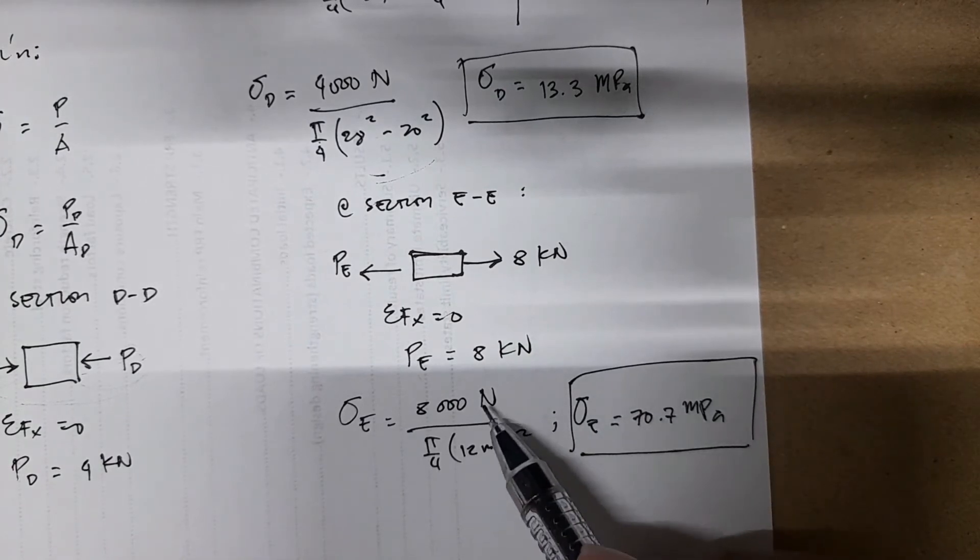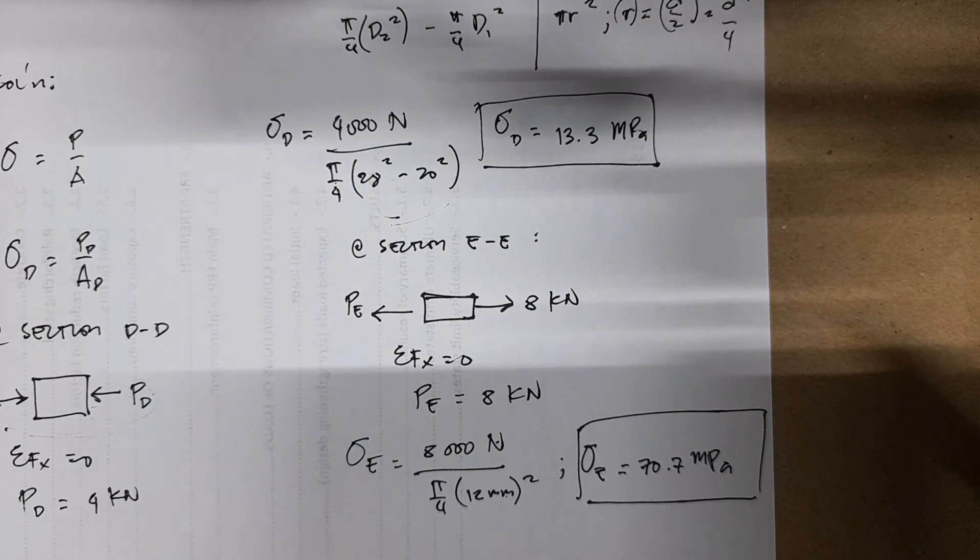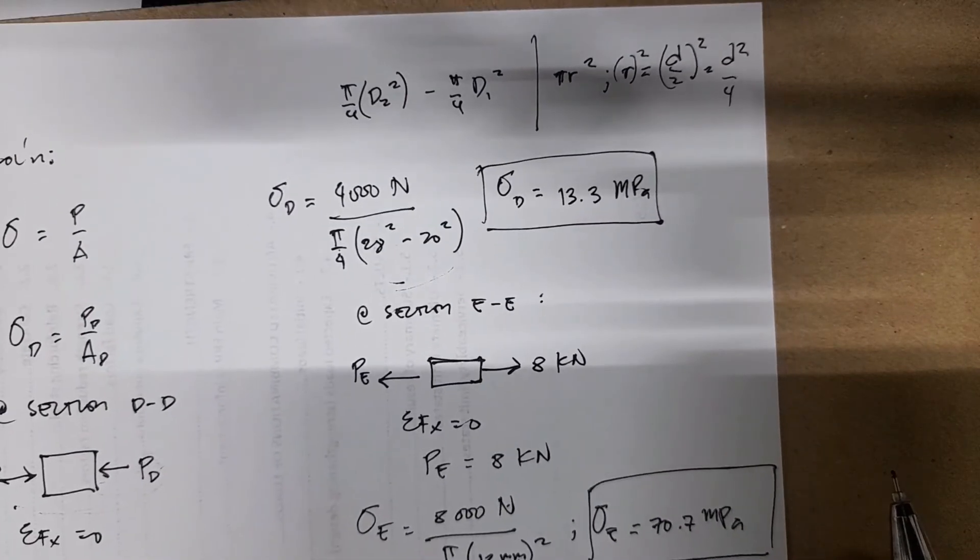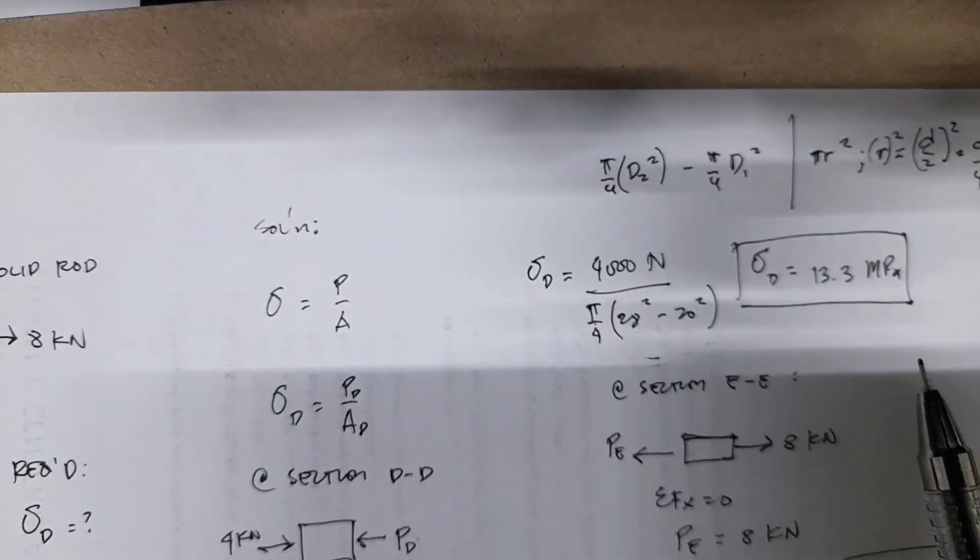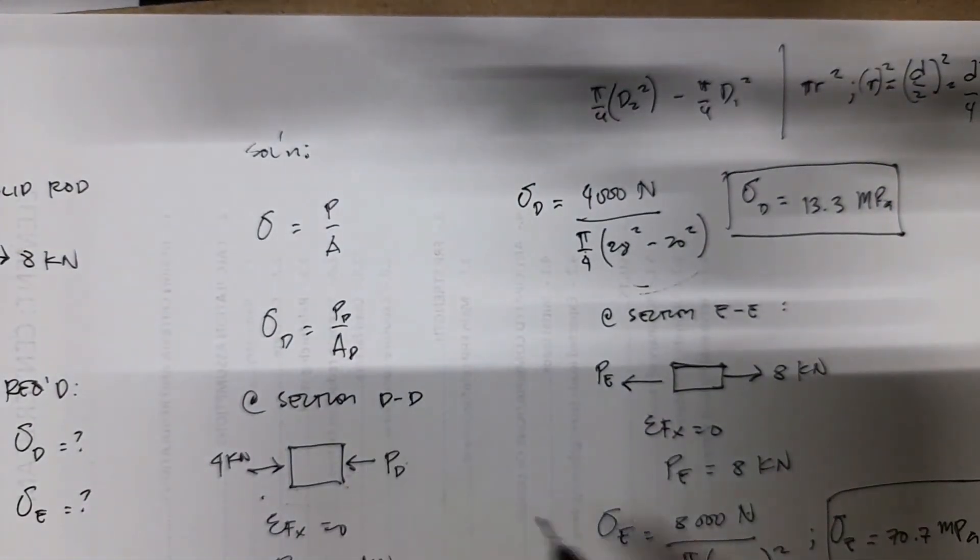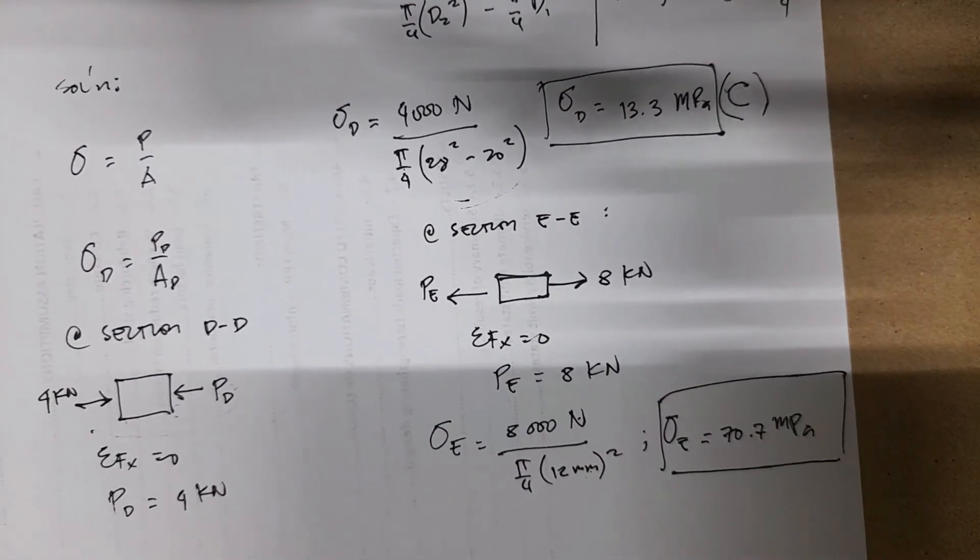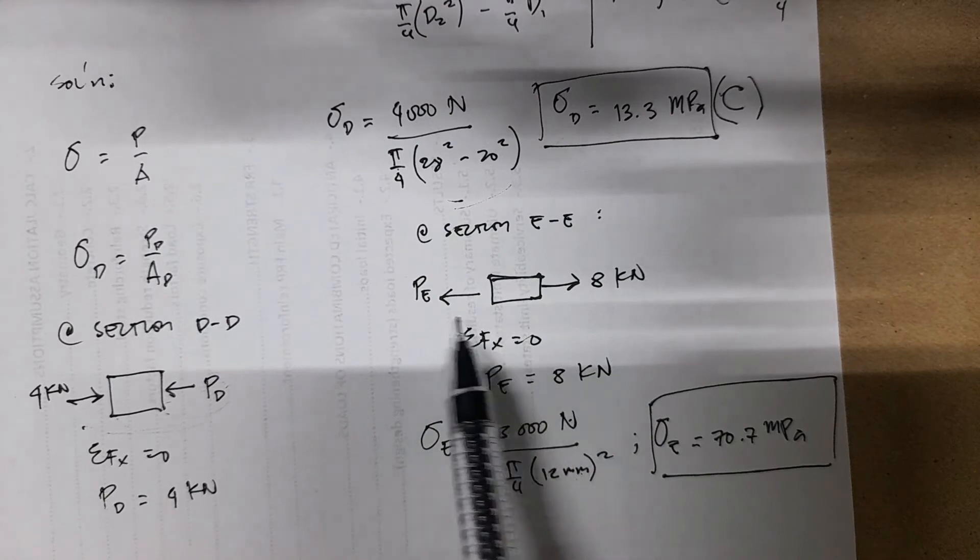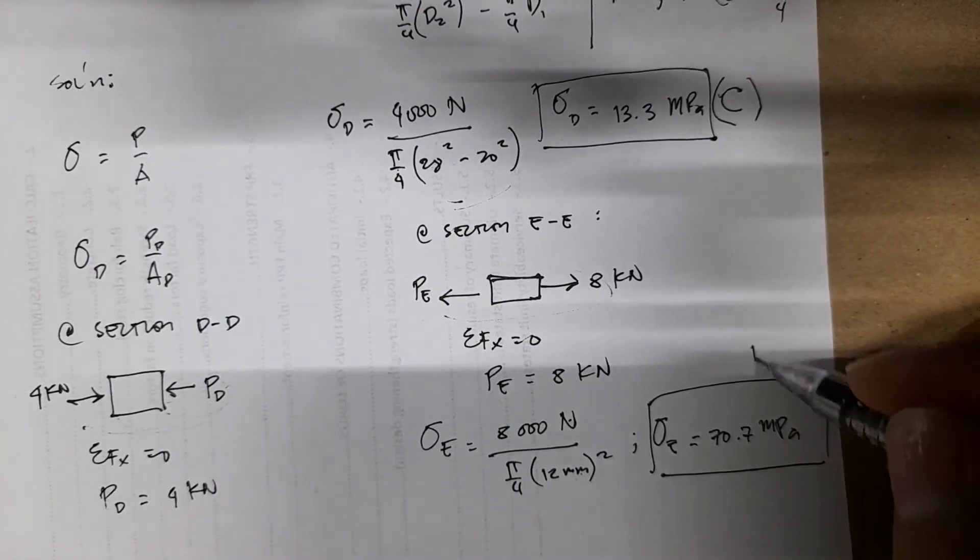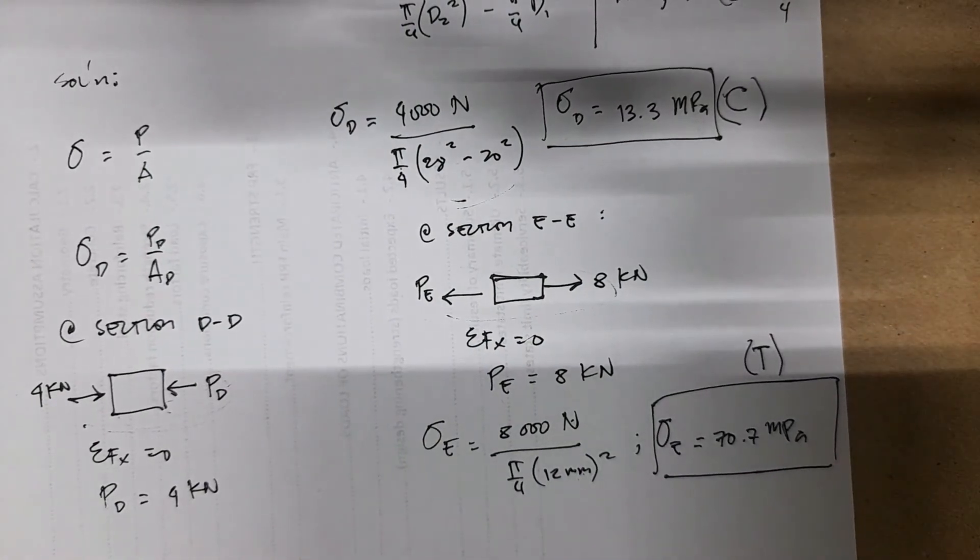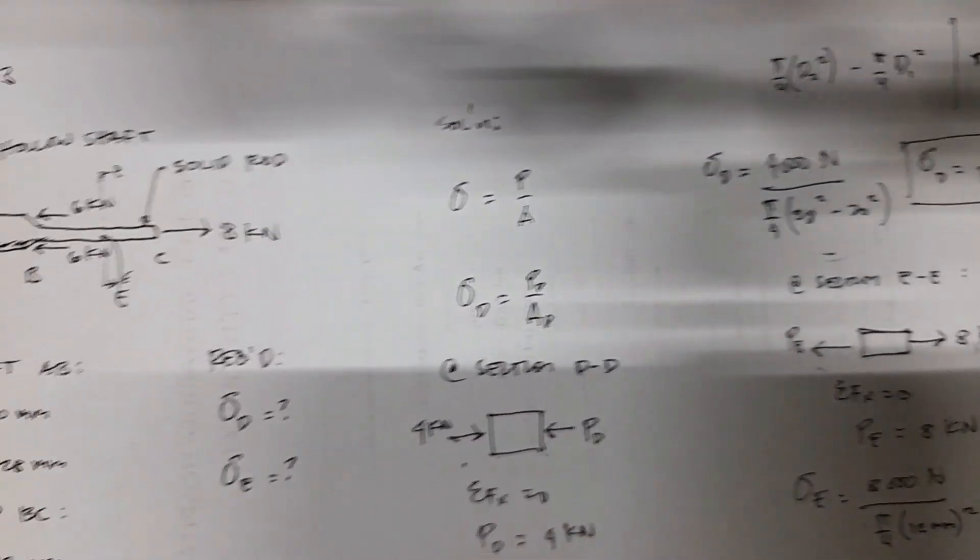So again, this is megapascals, newton per mm squared. And the directions, we have the stress D. If you can observe this drawing, it's a compressive stress. And the stress E, you can observe from this drawing, it's directed away, it's tension.